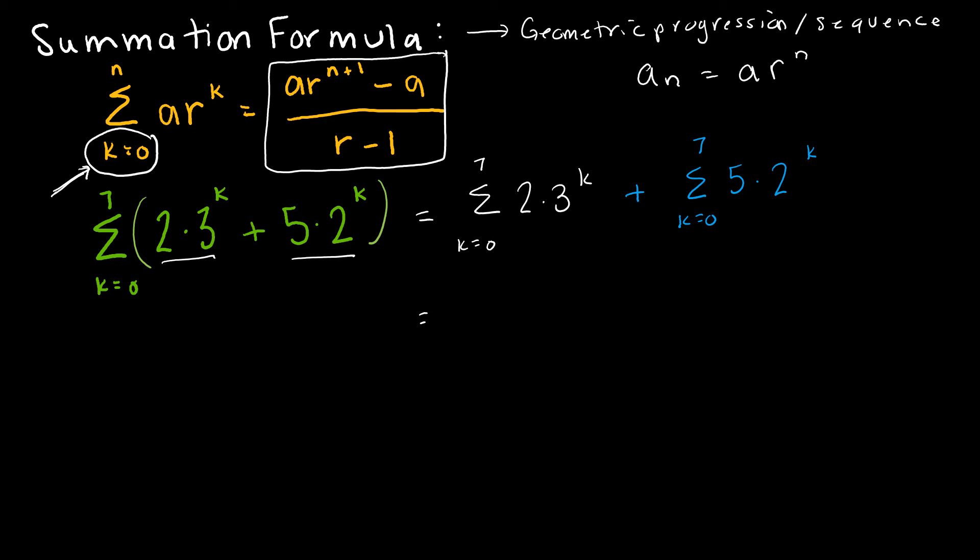So now I'm going to just use this formula. For this formula, a is 2 and r is 3. So let's use the formula. I have a, which is 2 times 3 to the n plus 1. So n is 7, so this is to the 8th power minus a, which is 2, and divided by r minus 1. r was 3, so 3 minus 1 is 2. That's the first part.